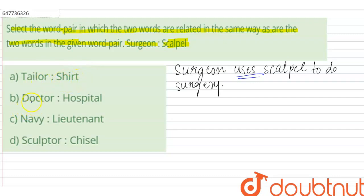Similarly, option B — doctor is to hospital. Doctor works at a hospital; a doctor doesn't use a hospital. It is the workplace of a doctor — doctor wahan kaam karte hain. So option B is also discarded.